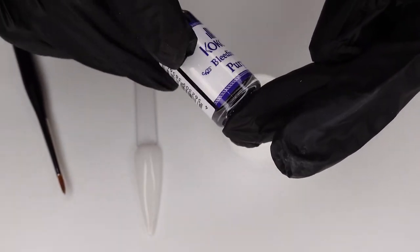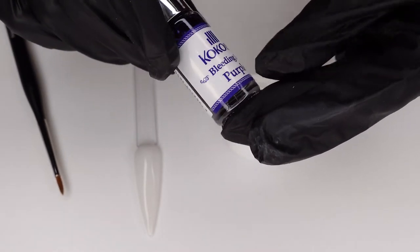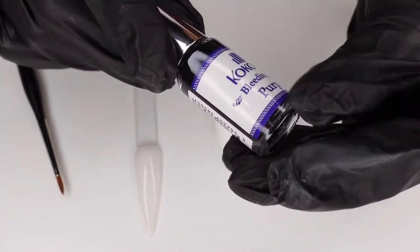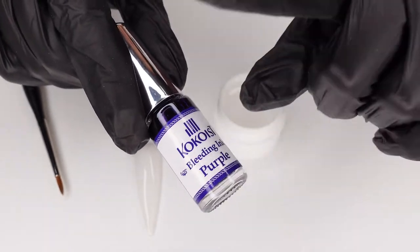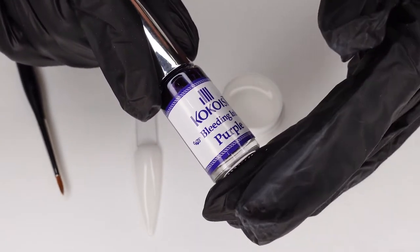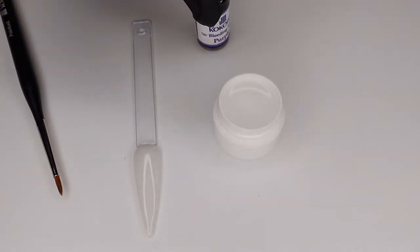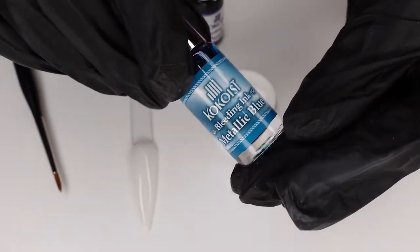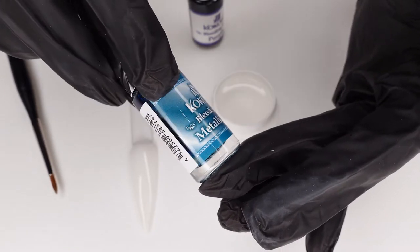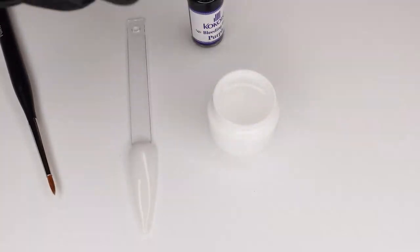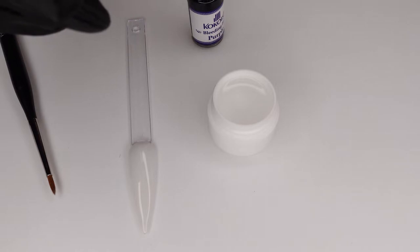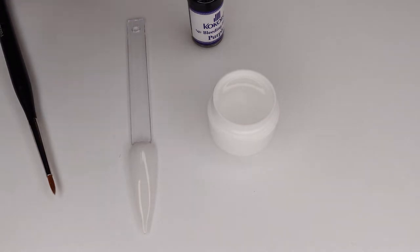So I have my Bleeding Ink Purple right here and Cocoist has nine of the regular Bleeding Inks. But we also have six metallic shades that we just recently came out with late last year. So obviously go check those out as well. There's lots of great shades to be had.